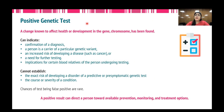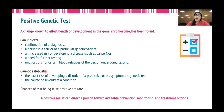Once you have chosen and done the genetic test, it is important to interpret the results. A positive genetic test result means that a change known to affect health or development in a gene or chromosome has been found. This can indicate confirmation of a diagnosis, that a person is a carrier of a particular genetic variant, an increased risk of developing a disease, or a need for further testing. It also has implications for certain blood relatives. However, a positive result cannot tell the exact risk of developing a disorder in predictive or pre-symptomatic testing, nor can it tell the course or severity of the condition throughout the lifetime. On the brighter side, a positive result can direct a person toward available prevention, monitoring, and treatment options.